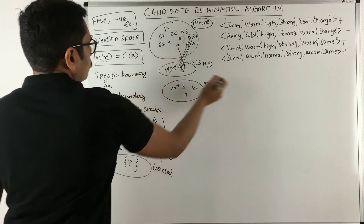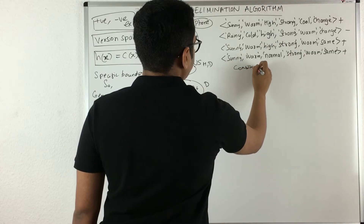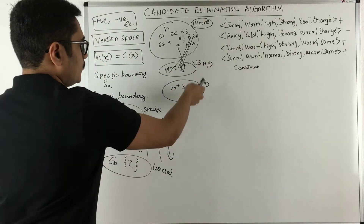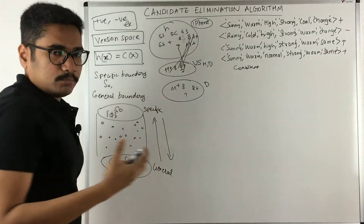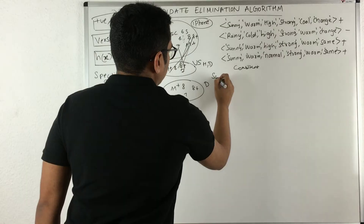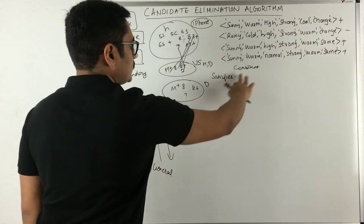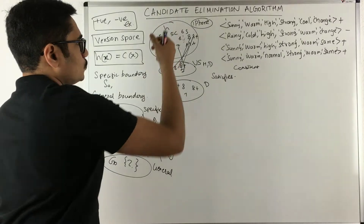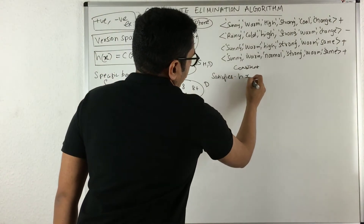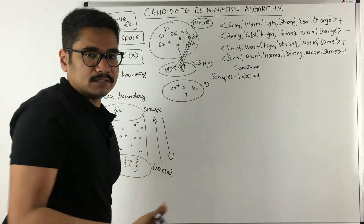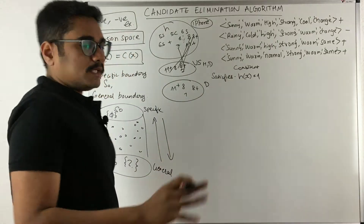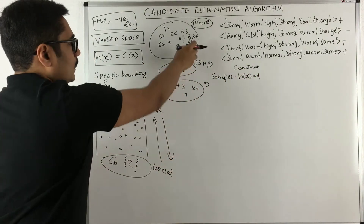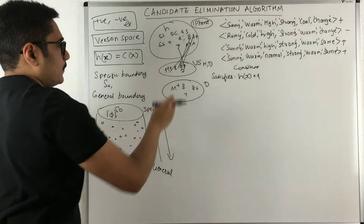Observable instances must be consistent. Consistency means H(X) = C(X) — whatever is in your training sample must be confirmed by your hypothesis space. Satisfiability is different: it checks whether a particular instance belongs to the hypothesis space, i.e., H(X) = 1, regardless of whether X is a positive or negative example. Consistency requires confirmation against all elements in the training sample.